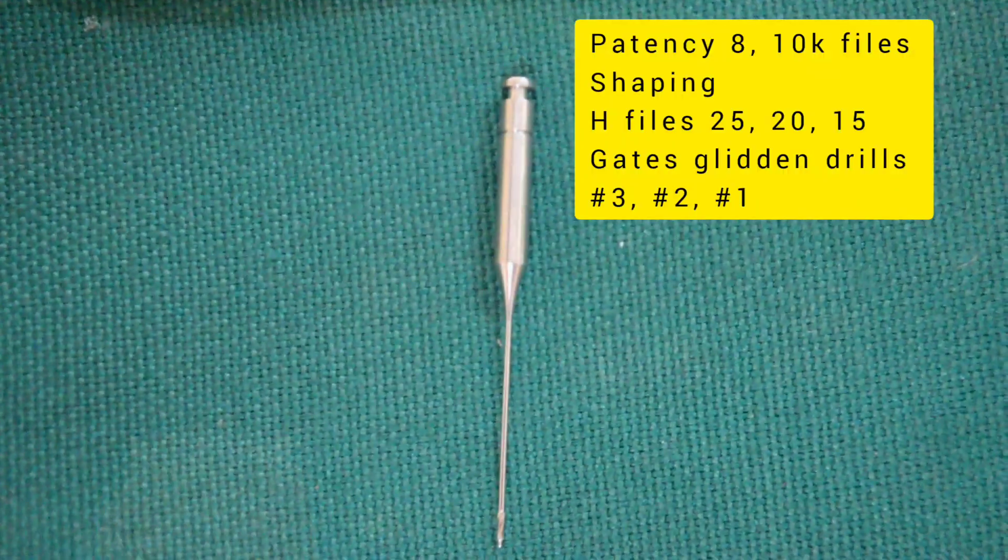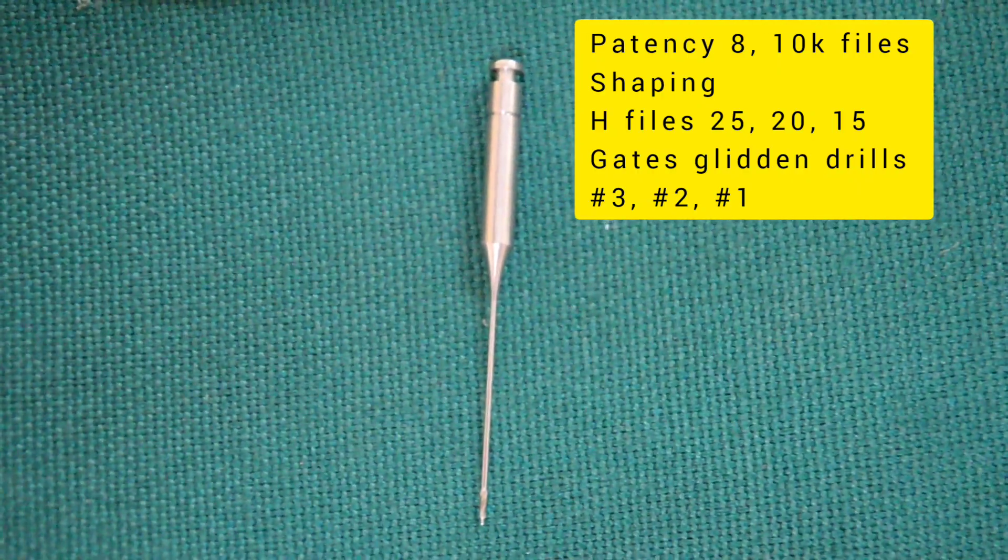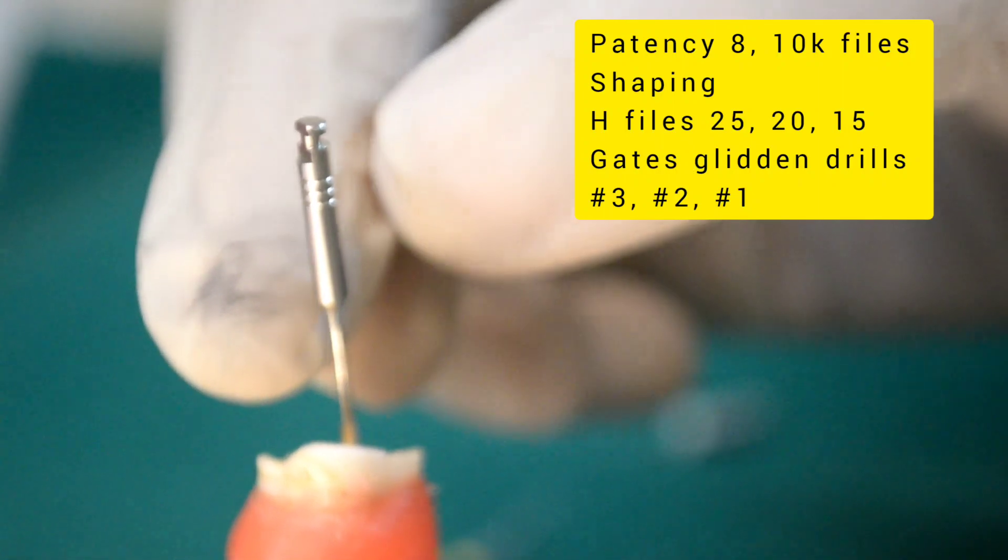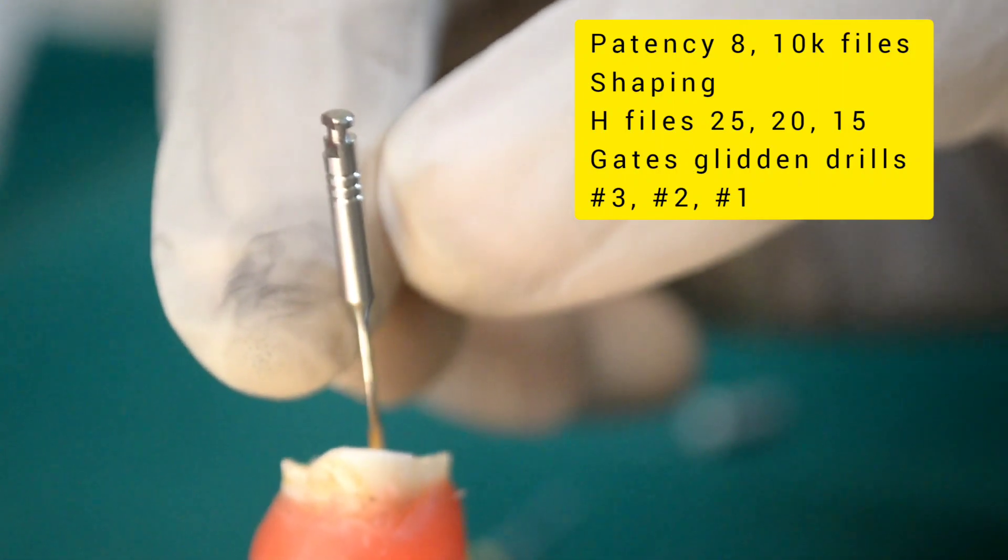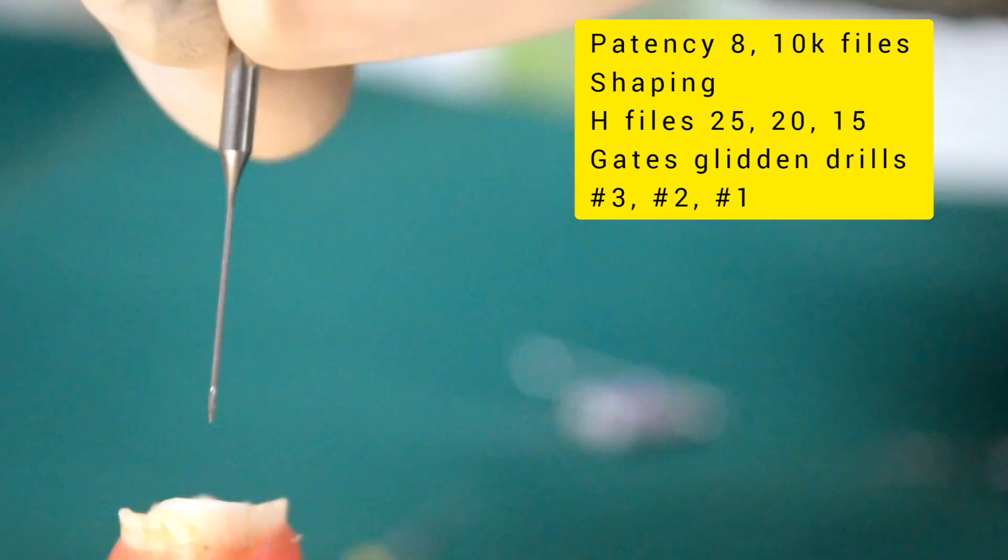This is a stainless steel Gates Glidden drill with flame-shaped non-end cutting tip. After preparation with hedge files, coronal flaring of the root canal is done with the help of GG drills number 3, 2, and 1.